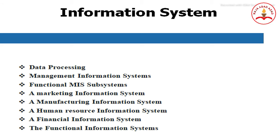A financial information system is an MIS that provides information to be used by the finance function; much of this information comes from the organization's AIS. Examples include cash flow summaries and payment information. Functional information systems are found in many organizations — any well-defined application area might develop its own MIS. For instance, an internal audit information system might be developed for the internal audit function, and a corporate quality information system for the organization's corporate quality group.